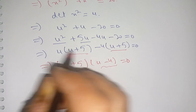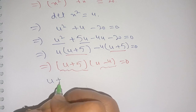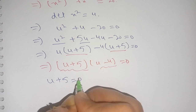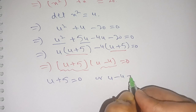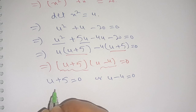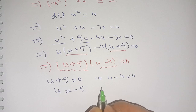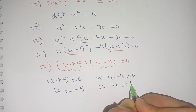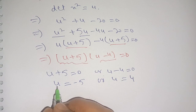Equating both factors to zero: u + 5 = 0 or u - 4 = 0. From here we get u = -5 or u = +4.